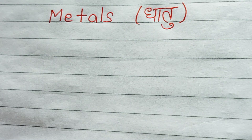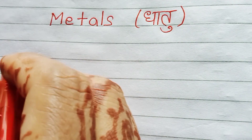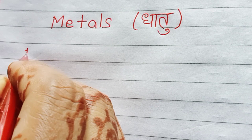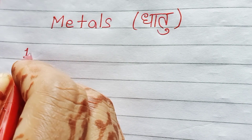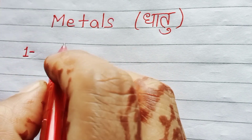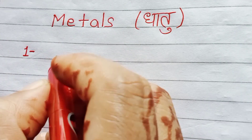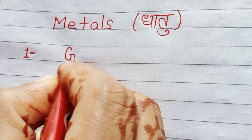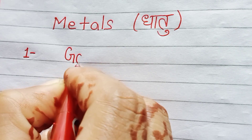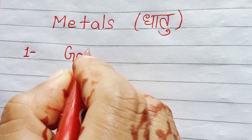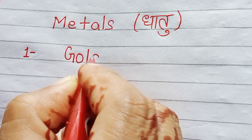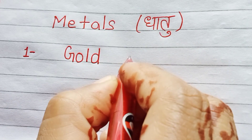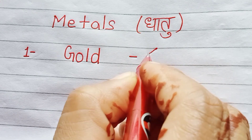Number 1 is Gold. G, O, L, D. Gold. Gold means Sona.